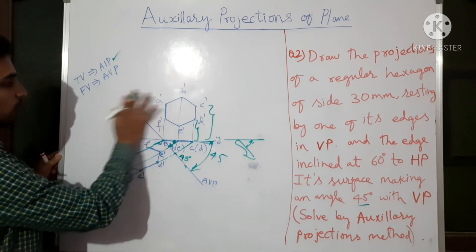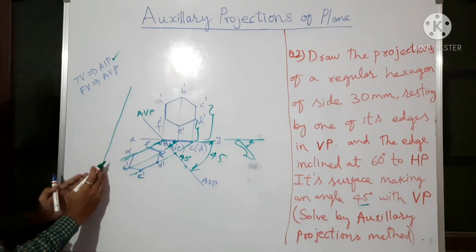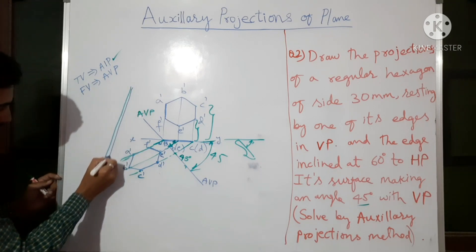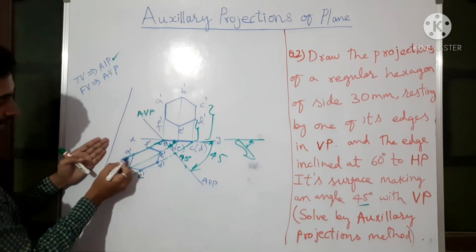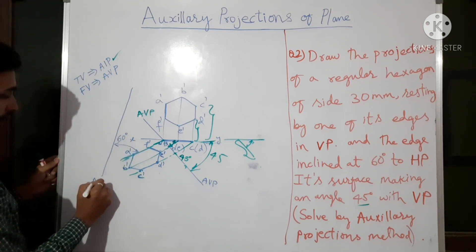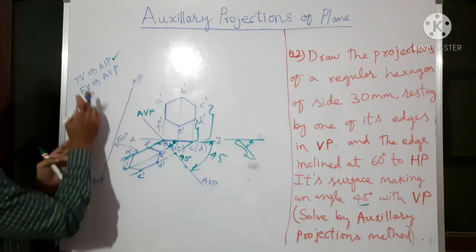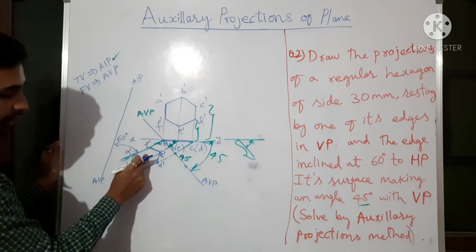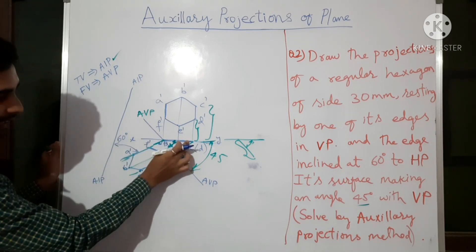With respect to the A-F projector, the inclination of the new AIP line should be 60 degrees. I reduce it up to here — this is the AVP. Now I am drawing a new XY line, the auxiliary inclined plane, in blue. This line is inclined 60 degrees with respect to the previous line. On this AIP we will get the top view.